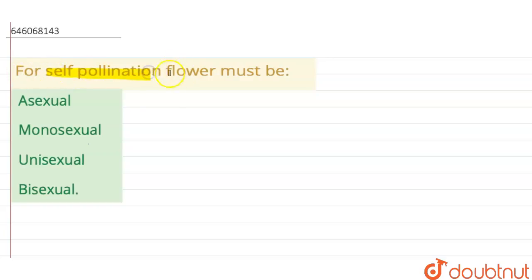For self-pollination, flower must be - here we have to discuss for self-pollination, the flower must be which of the following. Options are: first, asexual; second, monosexual; third, unisexual; and fourth option is bisexual.